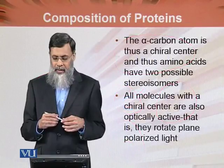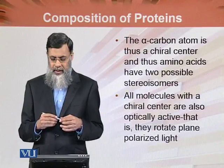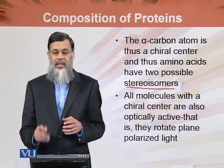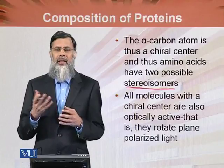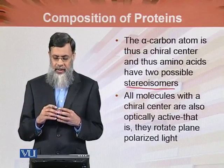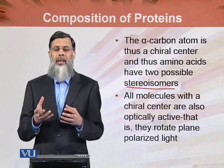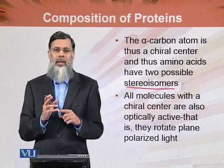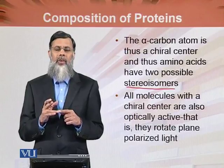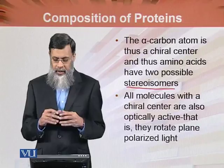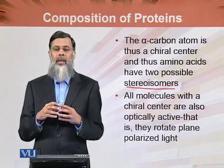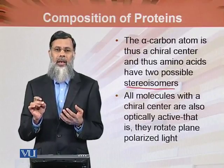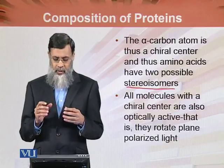The alpha carbon atom is thus a chiral center, and amino acids therefore have two possible stereo isomers. As discussed in the chemistry of carbohydrates, a chiral center means four different groups are attached. On the alpha carbon, except in glycine, there are four different groups: the R group, hydrogen, and the two functional groups — carboxyl and amino. This gives rise to two different possible stereo isomers.